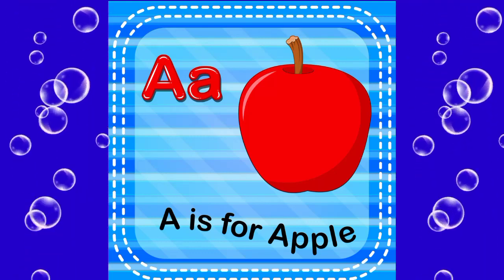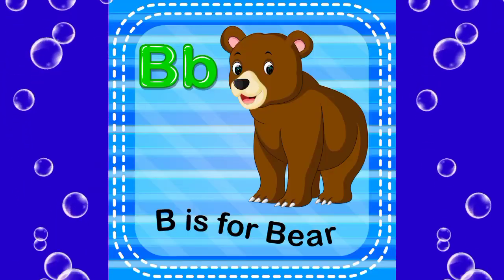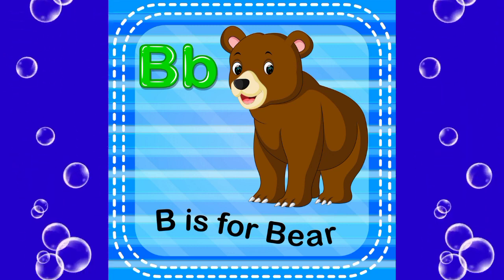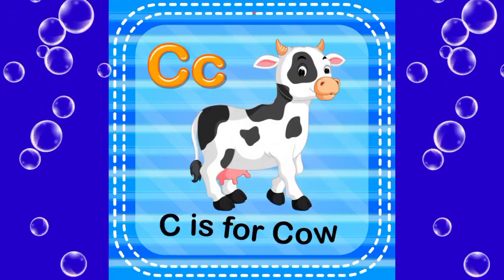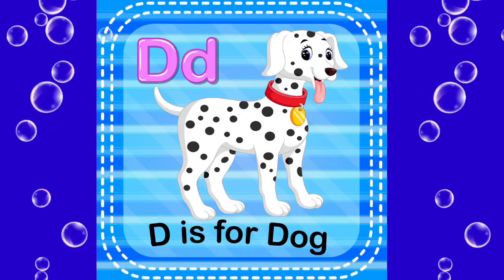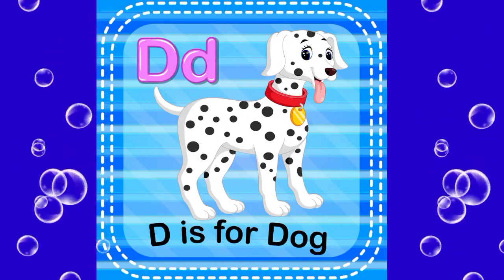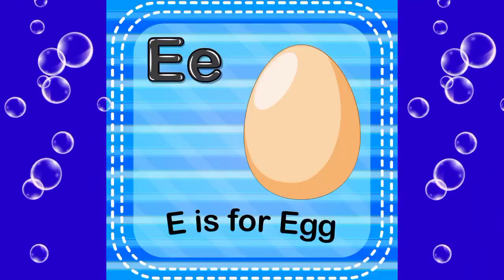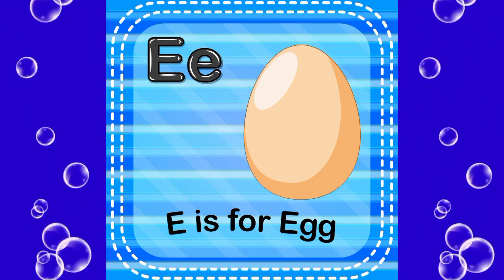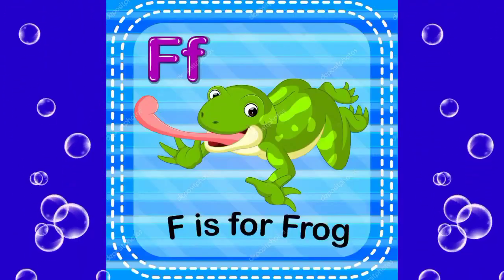A is for apple, B is for bear, C is for cow, D is for duck, E is for egg, F is for frog.